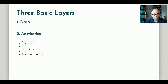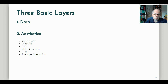A bit more about the three basic layers before we see some coding examples. I won't talk much about the data, but a bit more about aesthetics. The first thing that comes to mind is the axis — I have to specify which variable I want to map to the x-axis and the y-axis. But there are other aesthetics we may want to specify: colors and fills, size, opacity called alpha — a very powerful tool especially when you have a lot of data points — shapes for point charts, and line types and line width for lines.